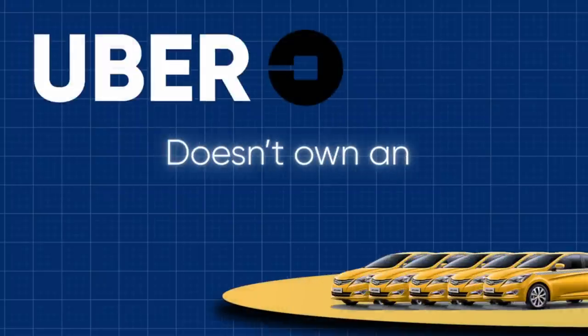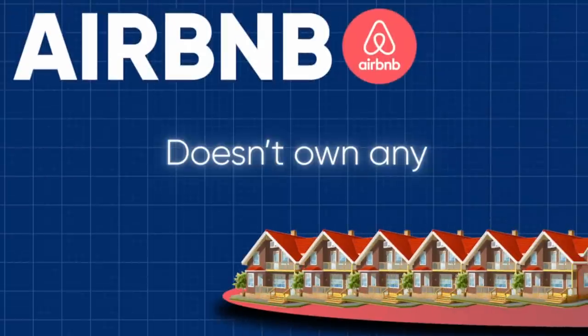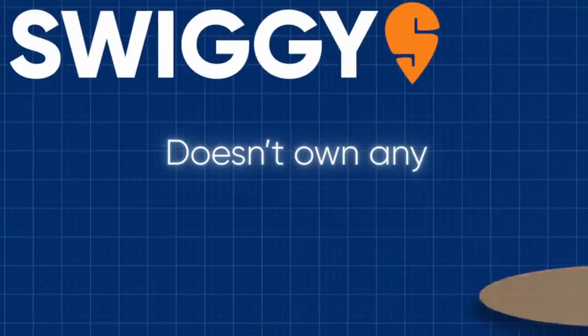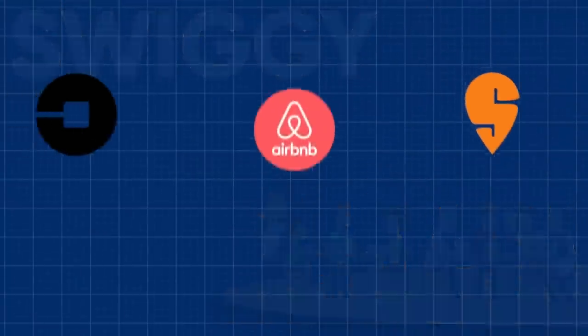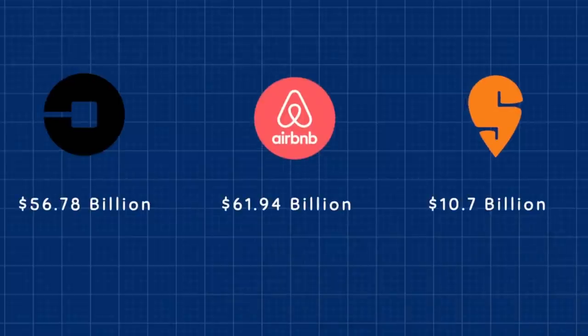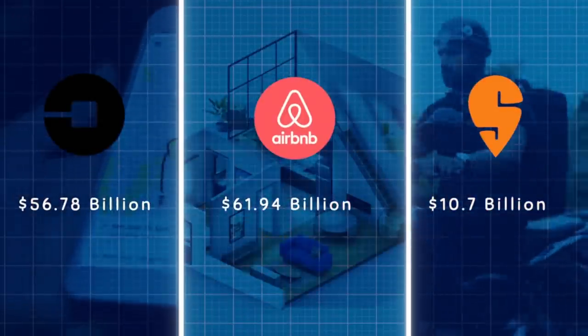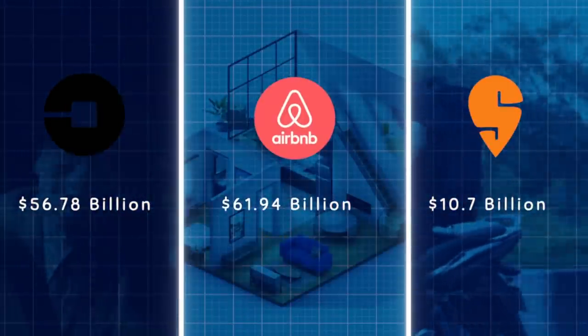Uber doesn't own any taxis. Airbnb doesn't own any real estate. Swiggy doesn't own any restaurants or even make food. Yet all three of these companies are giants. They dominate their respective sectors even though they're not actually making the product their business relies on.